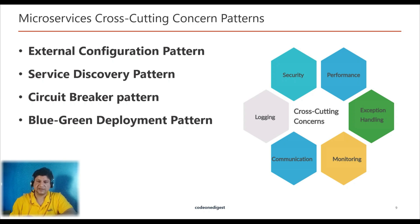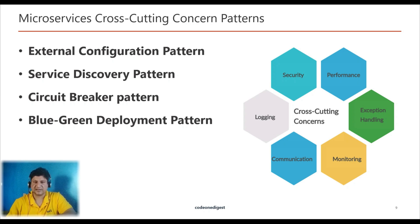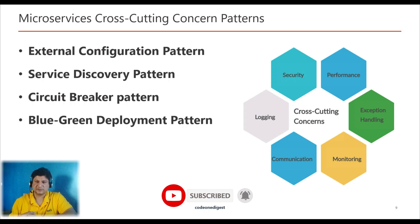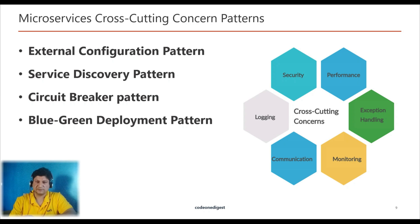First is External Configuration — this pattern suggests having environment-specific settings in an external file to avoid code modification. Second is Service Discovery Pattern — implements a service registry feature that helps in service discovery and health checks of services. Third is the Circuit Breaker Pattern — implements a circuit breaker to prevent cascading impact of failures to other services or modules. Fourth is the Blue-Green Deployment Pattern — create a blue (new) application in parallel to the green (existing) application, then go live with the blue once it is ready.